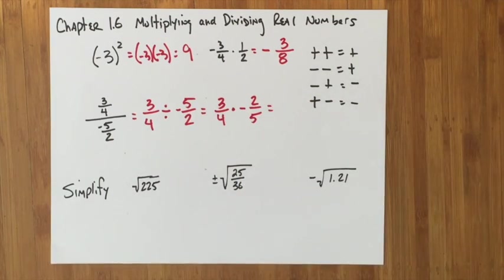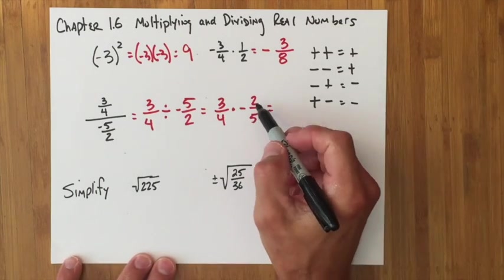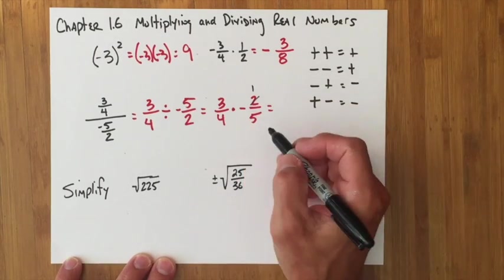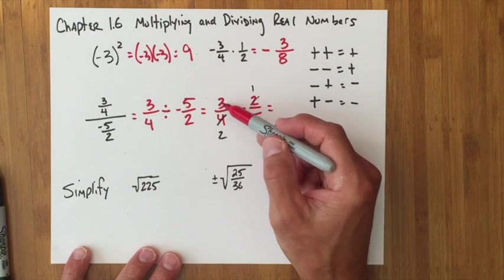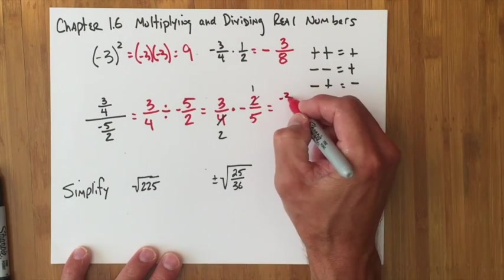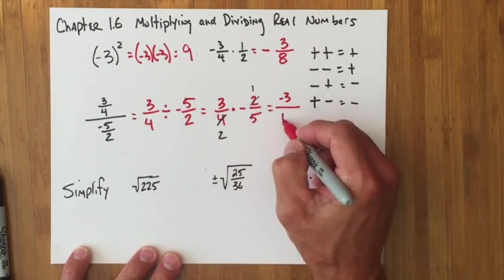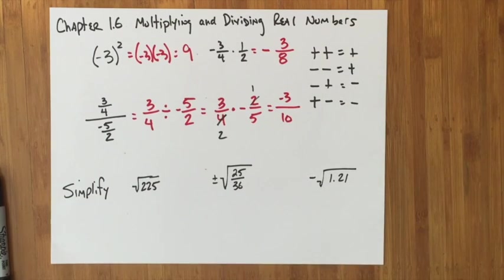I do have an opportunity to simplify here. This 2 divides 2 one time, 2 divides 4 twice, so I can simplify a little bit. And now I'm going to multiply straight across. 3 times negative 1 is negative 3, 2 times 5 is 10, and I have my answer of negative 3 tenths.